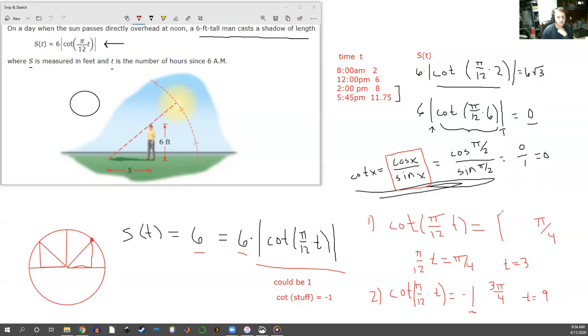And then the last part of this problem just says: explain what happens to the shadow as the time approaches 6 p.m. So that is as t goes to 12 from the left side. So that means from below, it's rising up to 12. So let's think about this from a perspective of the physical thing that's happening here.